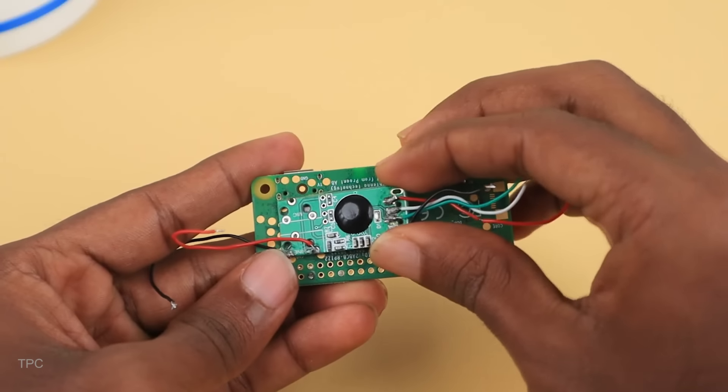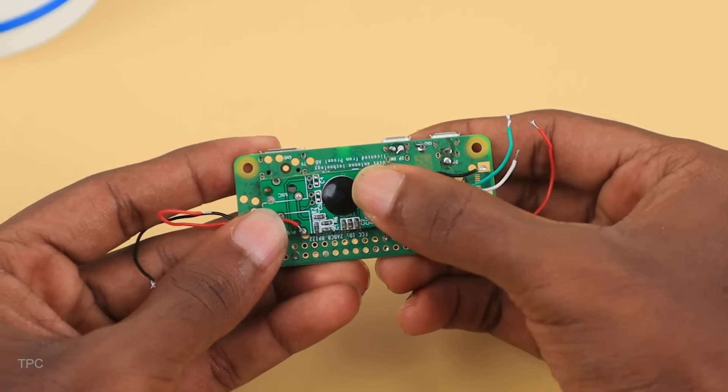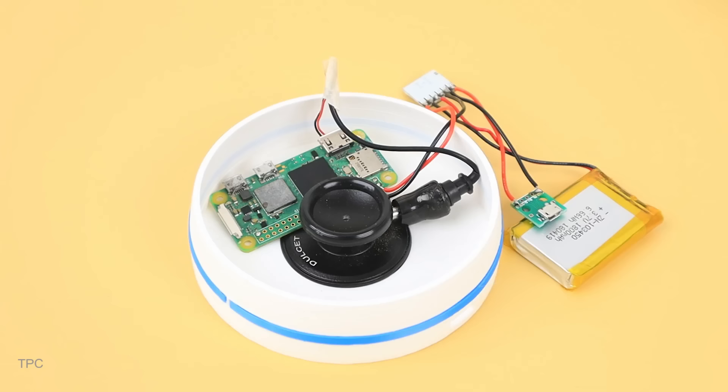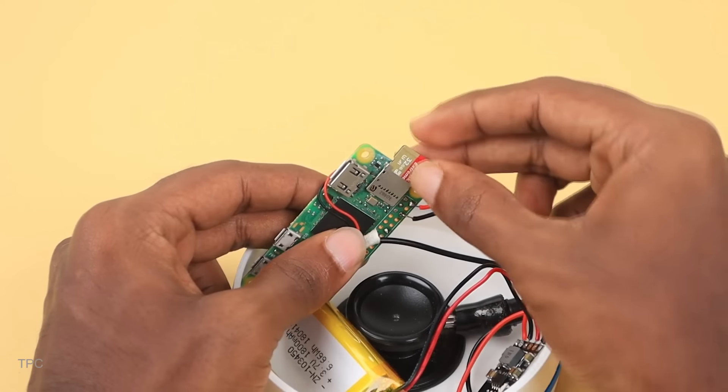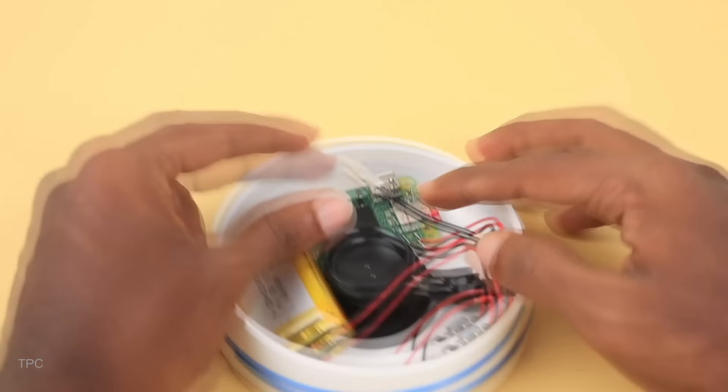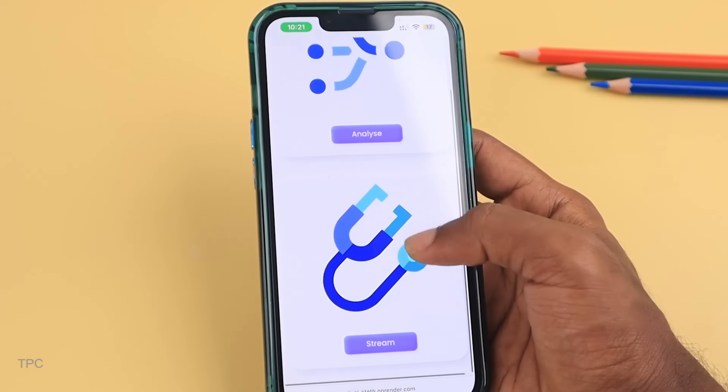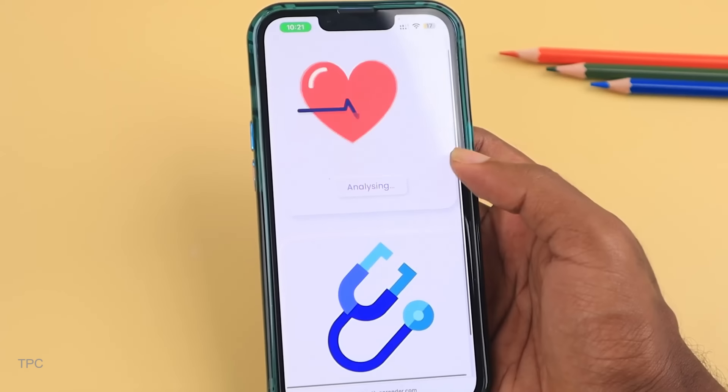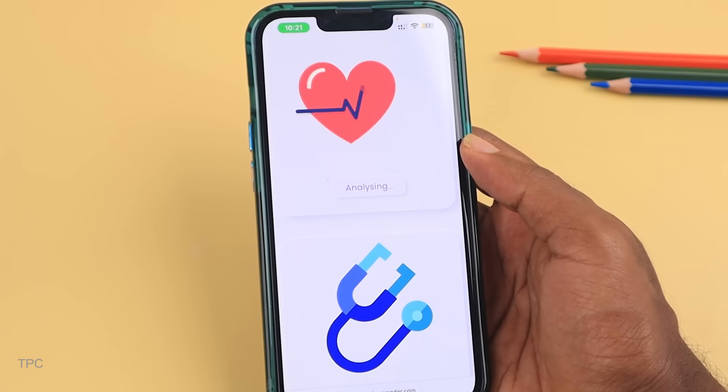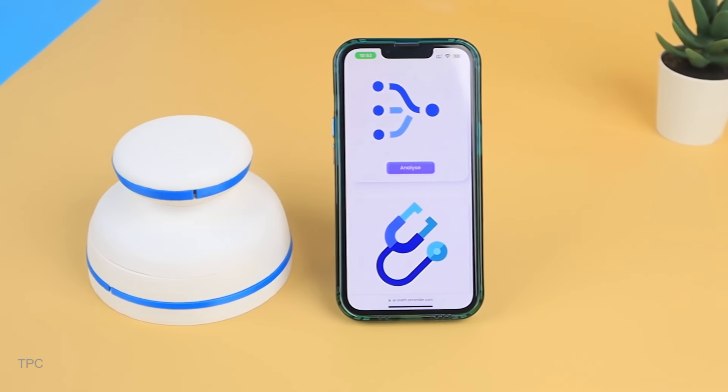Inside the device, a stethoscope is connected to a Raspberry Pi via a sound card, powered by a 100 mAh lithium polymer battery. The device offers two modes: analysis mode, where AI examines the heartbeat for potential issues, and stream mode, where the heartbeat sound is streamed directly to the doctor.